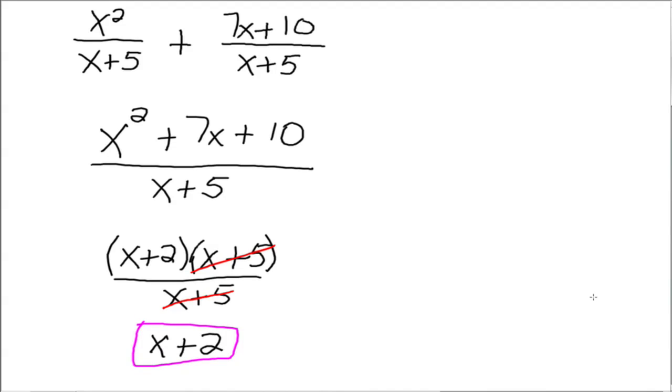So we can divide those out and x plus 2 is what's left behind. Okay, so for adding, same denominators, keep the denominator and go this numerator plus this numerator all over one denominator and then simplify as normal.